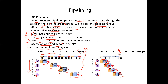In the RISC pipeline, the stages are: fetch the instruction, read registers, decode the instruction, execute the instruction or calculate an address, access an operand in data memory, and then write the result to a register.